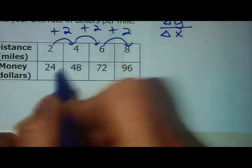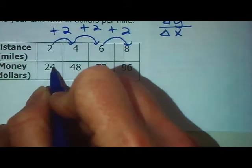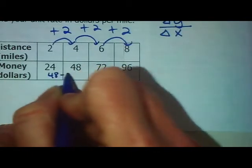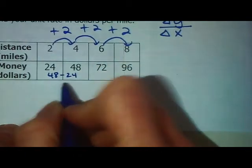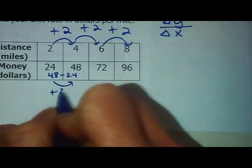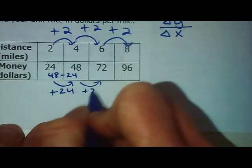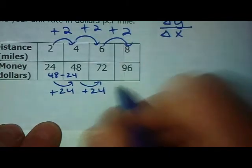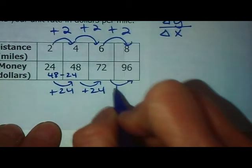If you're not sure you can just subtract the second and the first. So 48 minus 24 is 24. To get from 24 to 48 you're adding 24, 48 to 72 you add 24, 72 to 96 you add 24.